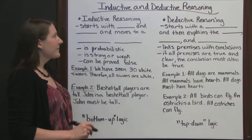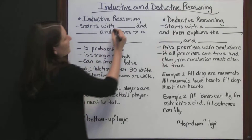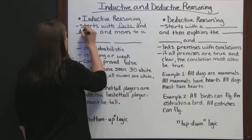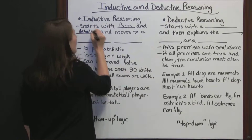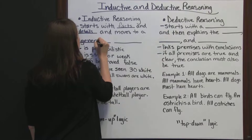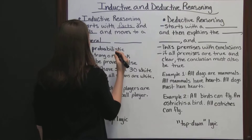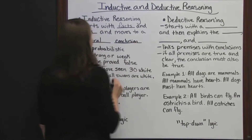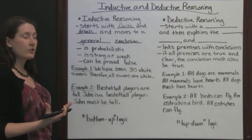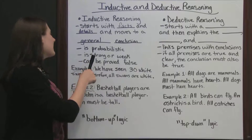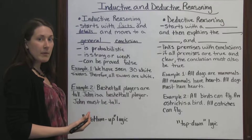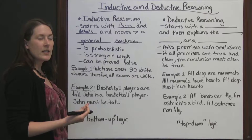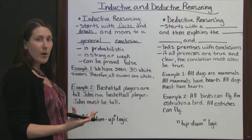Inductive and Deductive Reasoning. Inductive reasoning starts with facts and details and moves to a general conclusion. It lists different details and different examples, and moves to a general conclusion or helps you come to a certain conclusion. Inductive reasoning is probabilistic, which means that it's based on probability. You hear certain facts and you come to a conclusion, and that conclusion is going to have some level of probability to it.